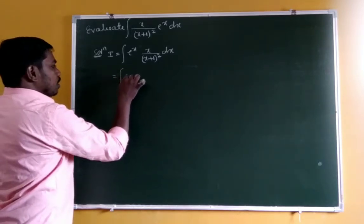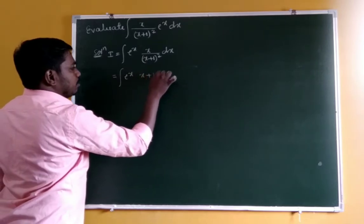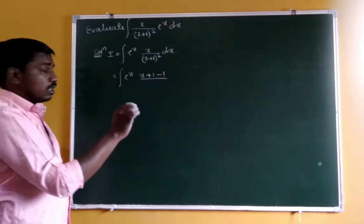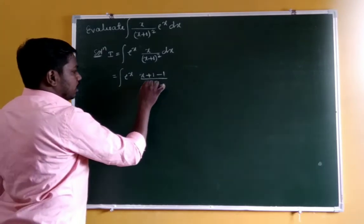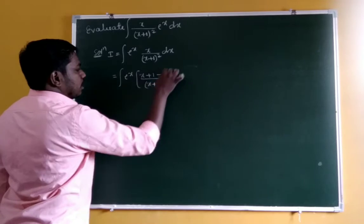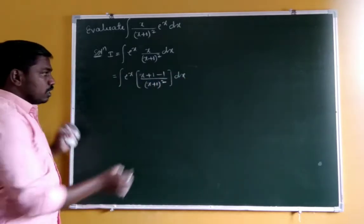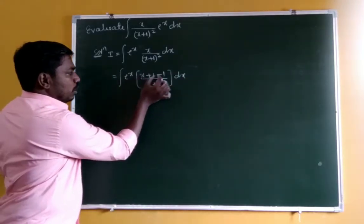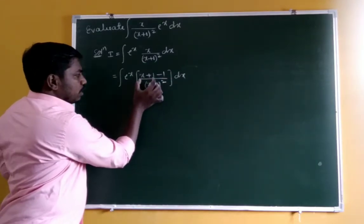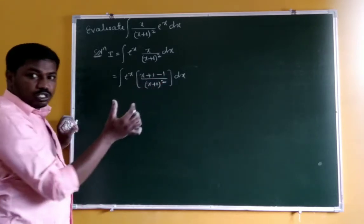Since we have eˣ into something, apply the formula. Rewrite the numerator x as (x+1) minus 1. So add 1 and subtract 1. We get x plus 1 in the numerator, so divided by (x+1)², minus 1 divided by (x+1)².